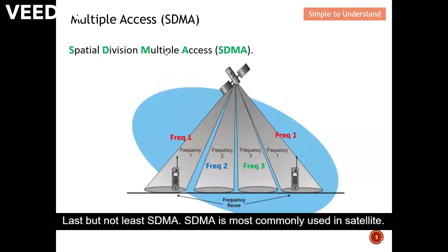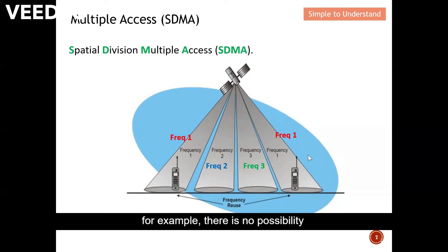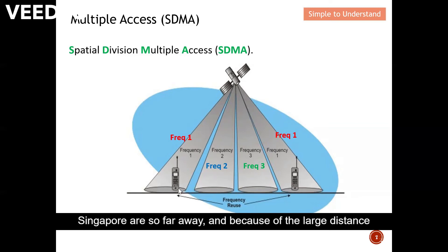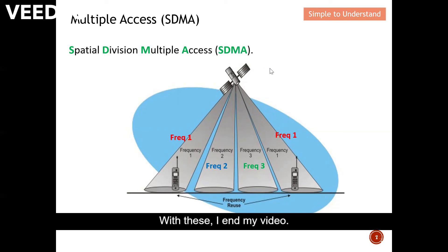Last but not least is SDMA, which is most commonly used in satellites. For example, one zone covers the USA and another covers Singapore. There is no possibility that the communication paths will interfere, because the two countries are so far apart. Because of this large distance, you can afford to reuse the same frequency, which allows you to accommodate more users. This is SDMA.